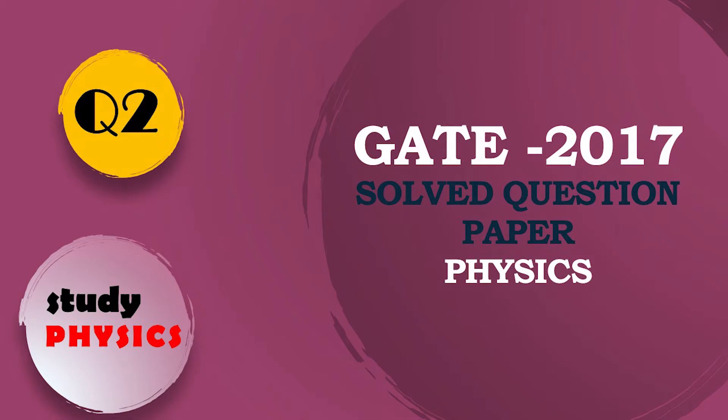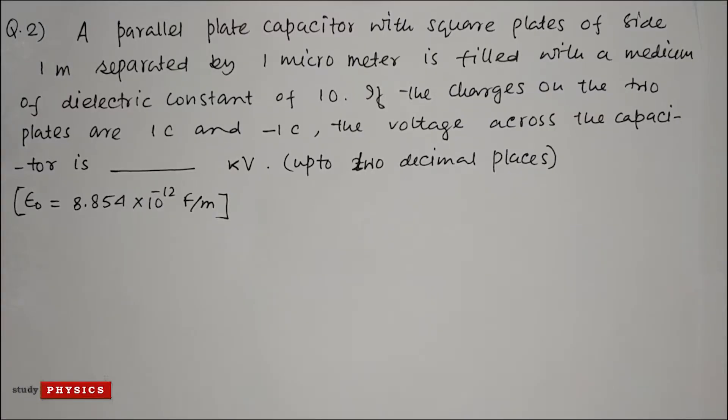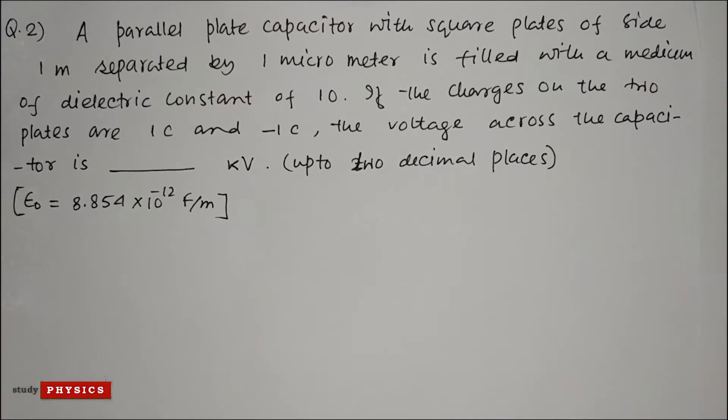Hi everyone, welcome to Study Physics. This is question number 2. A parallel plate capacitor with square plates of side 1 meter separated by 1 micrometer is filled with a medium of dielectric constant of 10. If the charges on the two plates are 1 coulomb and minus 1 coulomb, the voltage across the capacitor is...